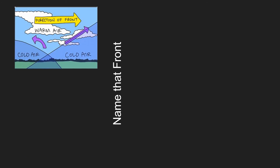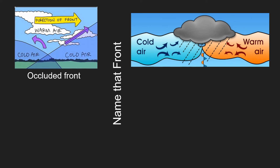Let's see if we can name that front. Looking at this one — what do you see? I see two cold air masses and some warm air mass sandwiched in between. What do you think that could be? If you said occluded front, you would be correct. Let's take a look at this one. I see a cold air mass and a warm air mass coming together, but it doesn't look like anybody's winning. So it must be a stationary front.